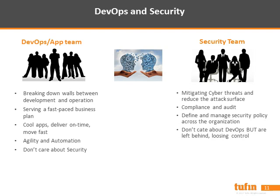On the other side, the security team's main mission is to mitigate cyber threats and reduce the attack surface. They need to meet compliance and audit requirements and define and manage security policy, not only in the cloud but across the whole hybrid environment. They don't prioritize DevOps in their agenda — security needs to stick to the security agenda. But they are definitely feeling left behind and losing control, given the fast pace that the DevOps team is running in cloud. These two teams have two different agendas, which is why cloud security is so challenging.